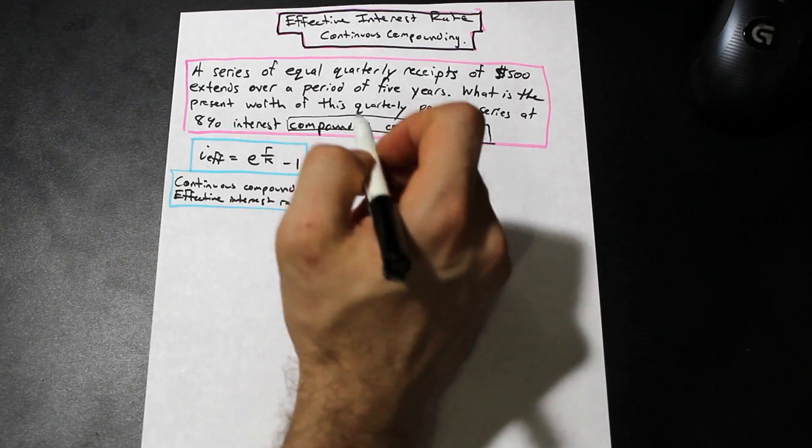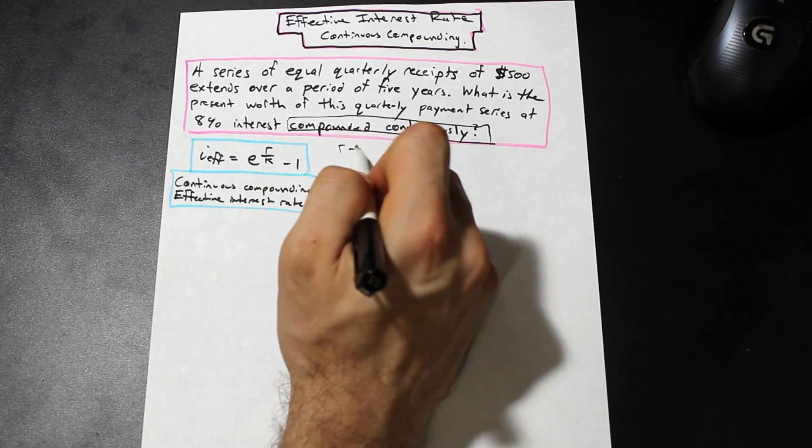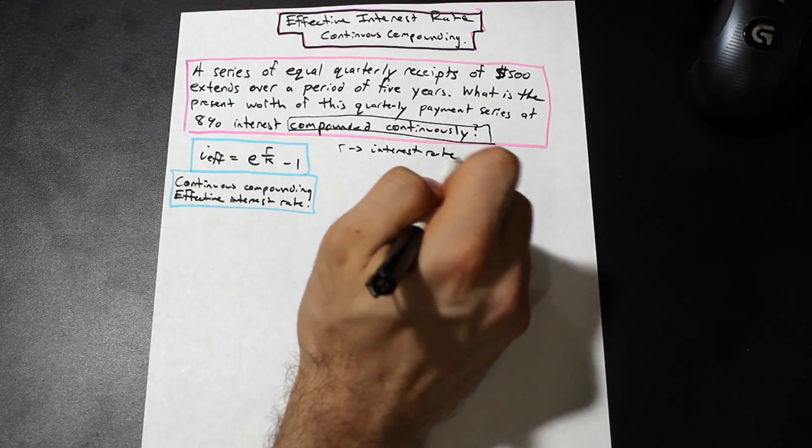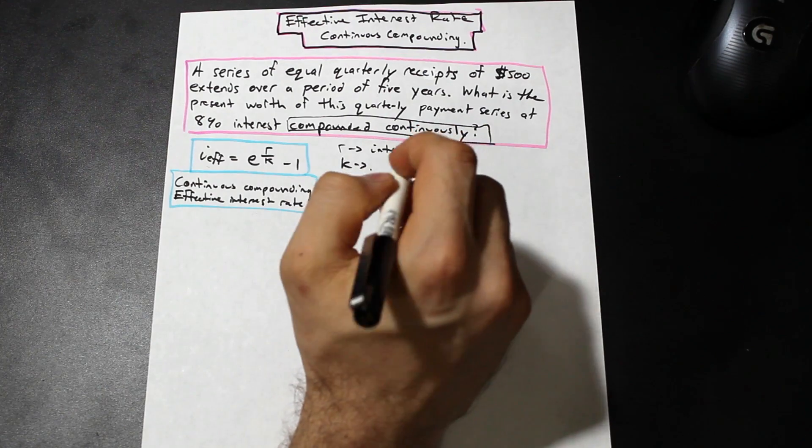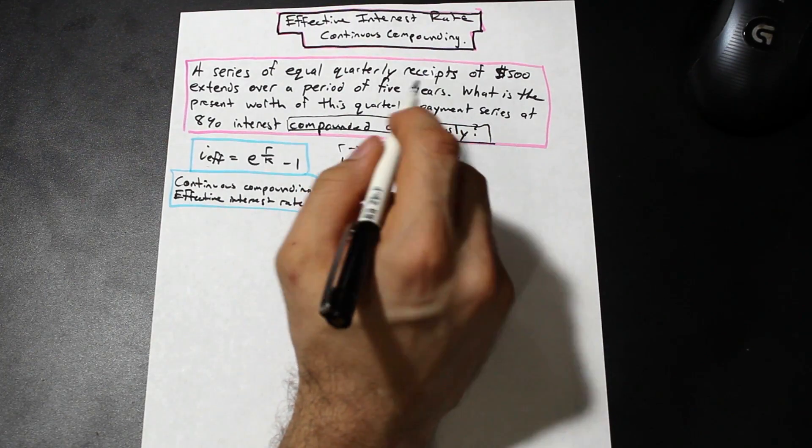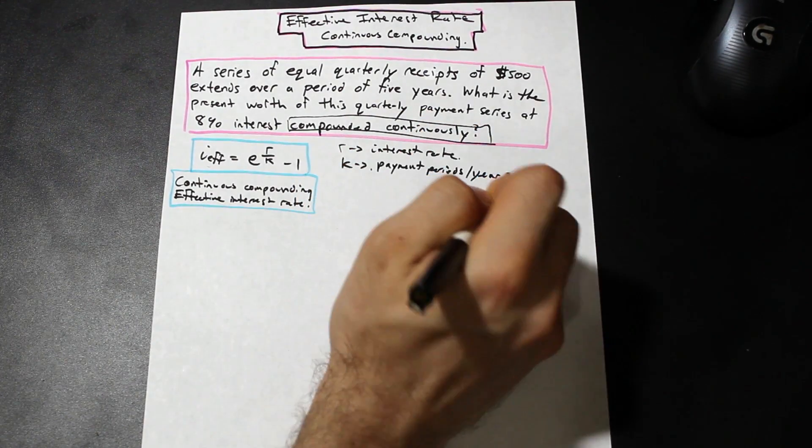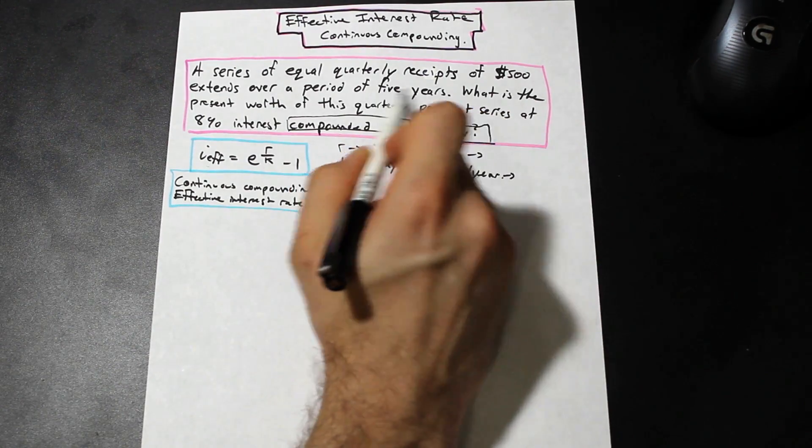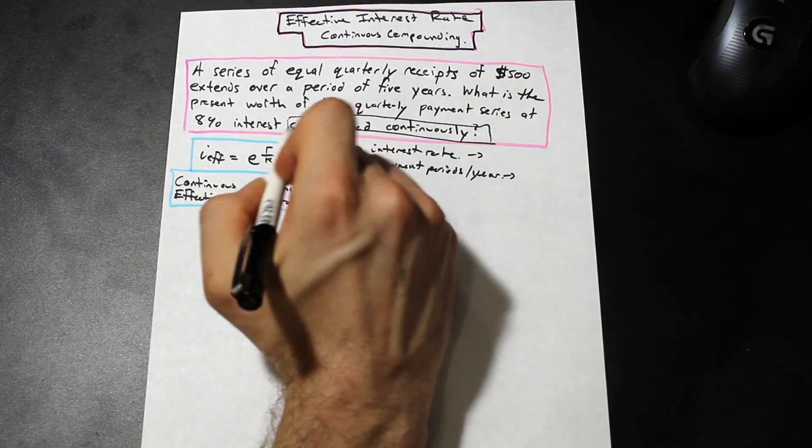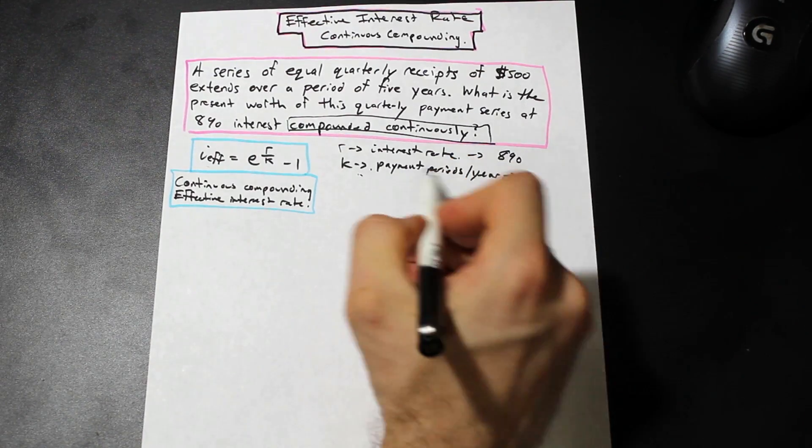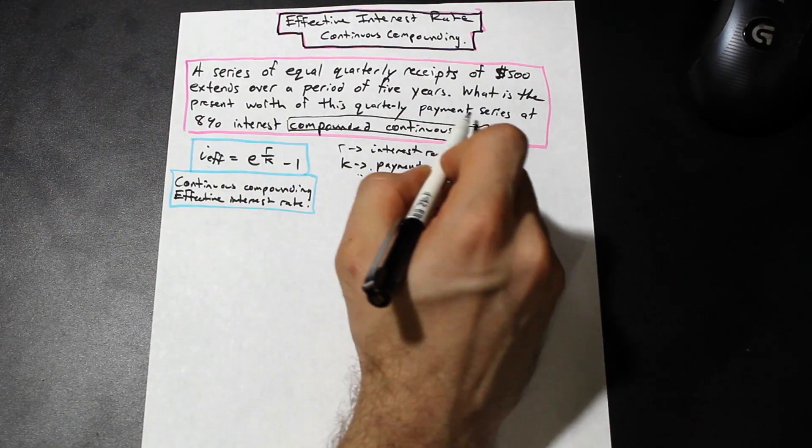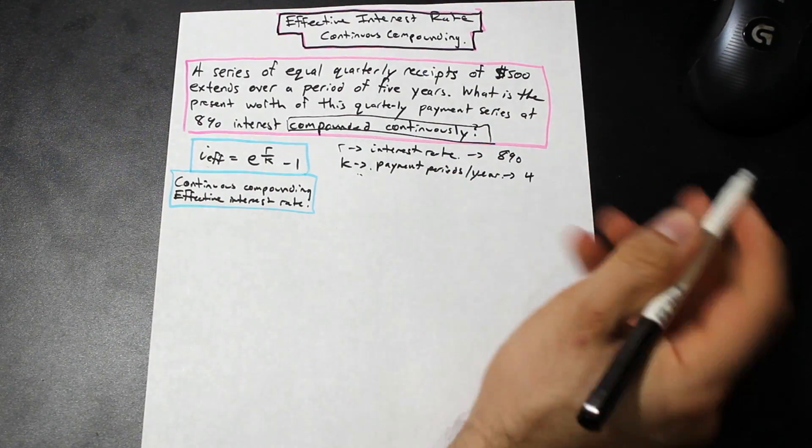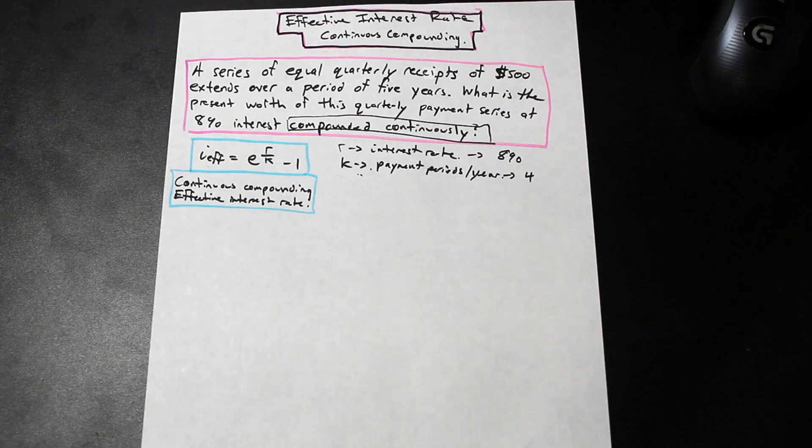So that's the formula that we're going to use where r is the interest rate and k is the number of payment periods per year. So in this case, let's take a look at if we can find these values right away in our question. We have our interest rate is 8% and number of payment periods per year - we have a quarterly payment series so that is going to be 4 because there's four quarters per year.